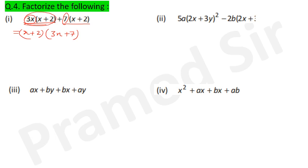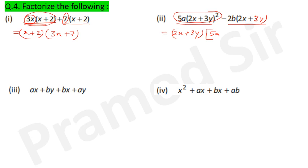Question 2: 5a(2x+3y)² − 2b(2x+3y). What is matching: (2x+3y). Take (2x+3y) as common. Left in first term: 5a(2x+3y) and in second term: 2b. Answer: (2x+3y)(5a(2x+3y) − 2b).